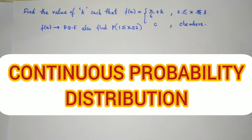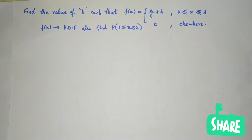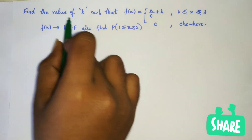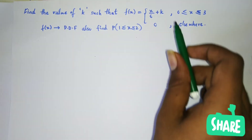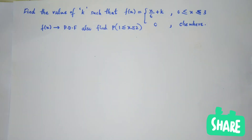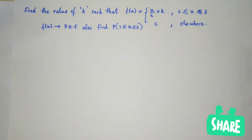In this video we will be discussing continuous probability distribution and some problems based on it. Here it is given to find the value of k such that f(x) is a given function. We need to identify whether it is a continuous probability distribution or not.